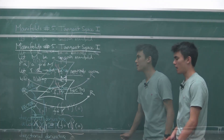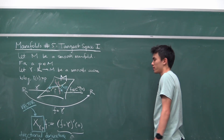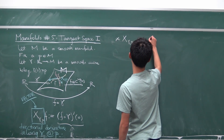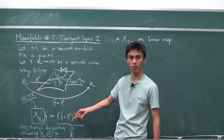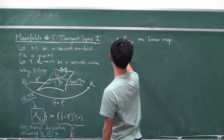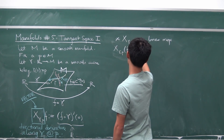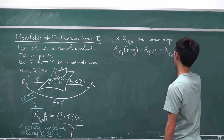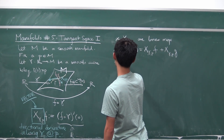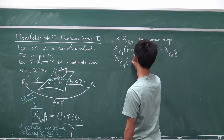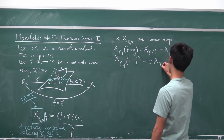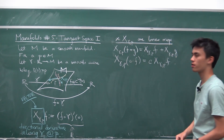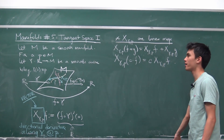These directional derivatives X_{γ,p} are linear maps, because they're defined in terms of the derivative operator and differentiation is linear. In particular, X_{γ,p}(f + g) = X_{γ,p}(f) + X_{γ,p}(g), and X_{γ,p}(c·f) = c · X_{γ,p}(f). So tangent vectors, which are really just directional derivative operators, are linear maps.